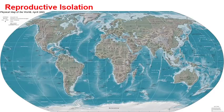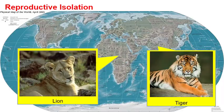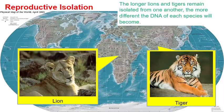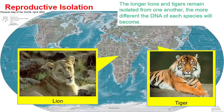On this world map, notice how lions and tigers are today geographically isolated from one another. The longer lions and tigers remain isolated from one another, the more different the DNA of each species will become. We would predict that as time passes, eventually lions and tigers probably will not be able to produce a liger — whether that's in 10,000 years or a million years, the longer they're isolated, the more different their DNA will become.